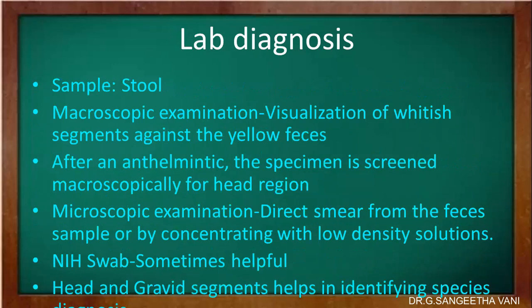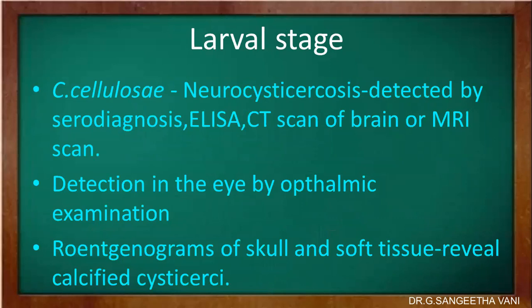Lab diagnosis: a stool sample is taken. Macroscopically, whitish segments can be seen on yellow feces. Microscopically, a direct smear from the feces sample can be taken, or concentration methods using low-density solutions can be used. The scotch tape method used for enterobiasis is also helpful in this case. The head and gravid segments are important for species diagnosis. For the larval stage, neurocysticercosis can be detected by serology (ELISA), computed tomography (CT scan) of the brain, MRI scan, ophthalmic examination of the eye, and radiographs of the skull and soft tissues which reveal calcified cysticercus.